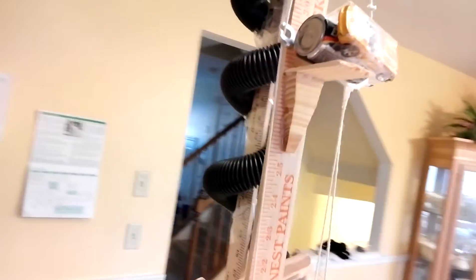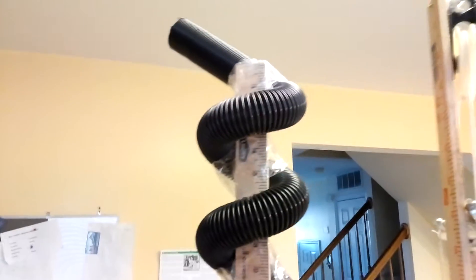So to recap on all of the simple machines used in here: the screw is the first thing, the vacuum hose, and then from there the wedge, which is down here.